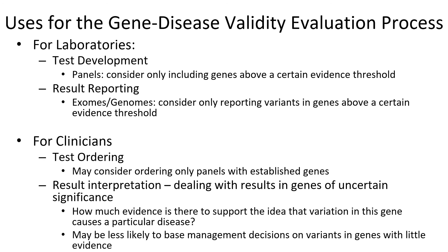This could similarly be used for clinicians. How do you deal with variants in genes of uncertain significance? One may be less likely to base management decisions on genes with little evidence, or may opt to pursue more aggressive follow-up for genes with mounting evidence. Additionally, an approach like this could be used to guide test ordering — a clinician could consider only ordering panels with established genes.